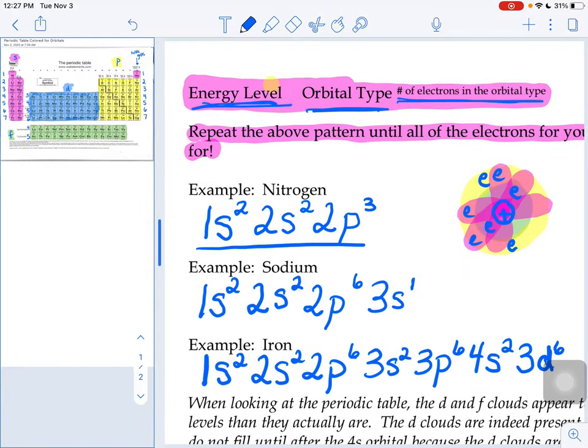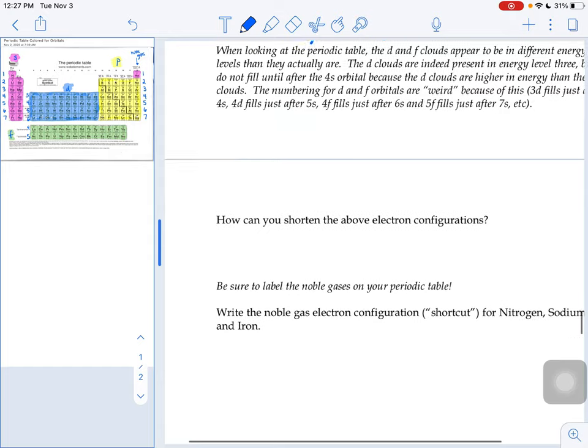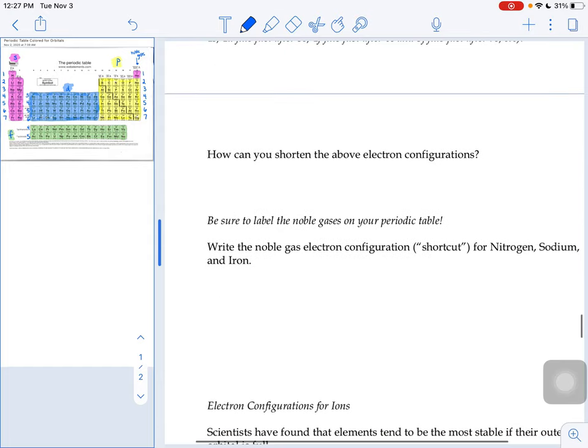And there is. So how can we shorten those electron configurations? You can do something called the noble gas configuration. And so I'm going to say what you're going to do, and it's not really going to be working here just yet, but then we'll actually try an example, and then I think it'll make a little more sense.